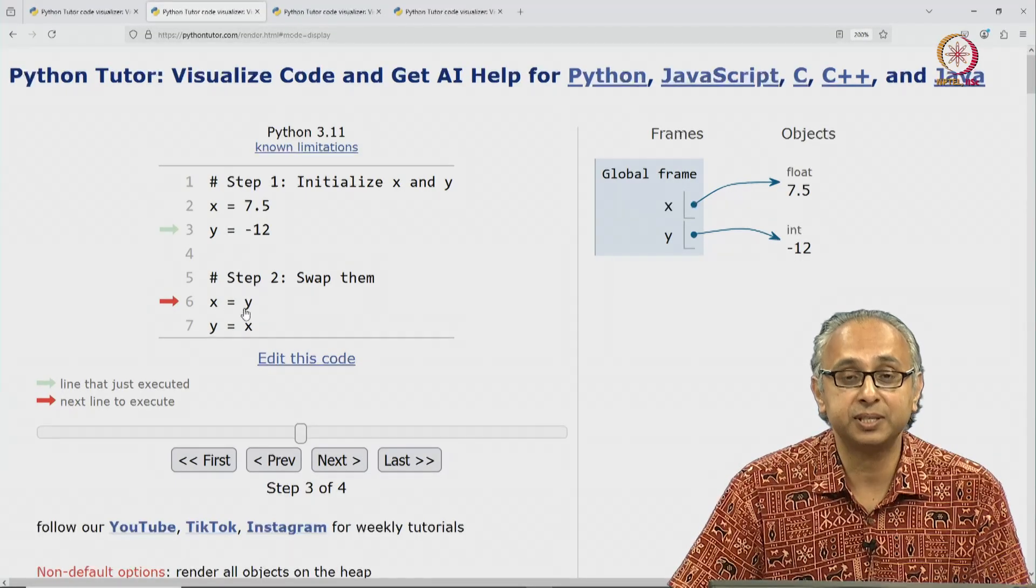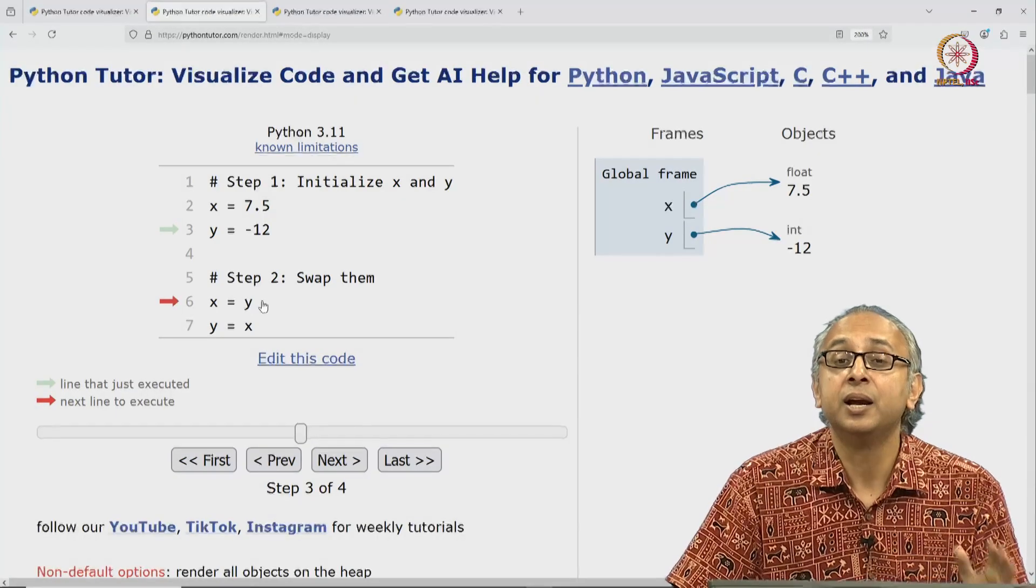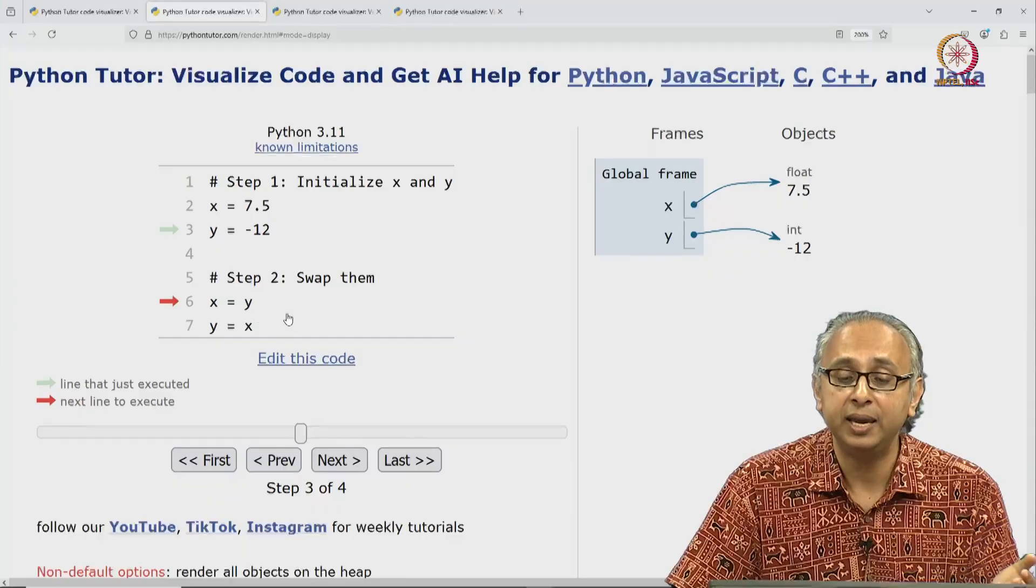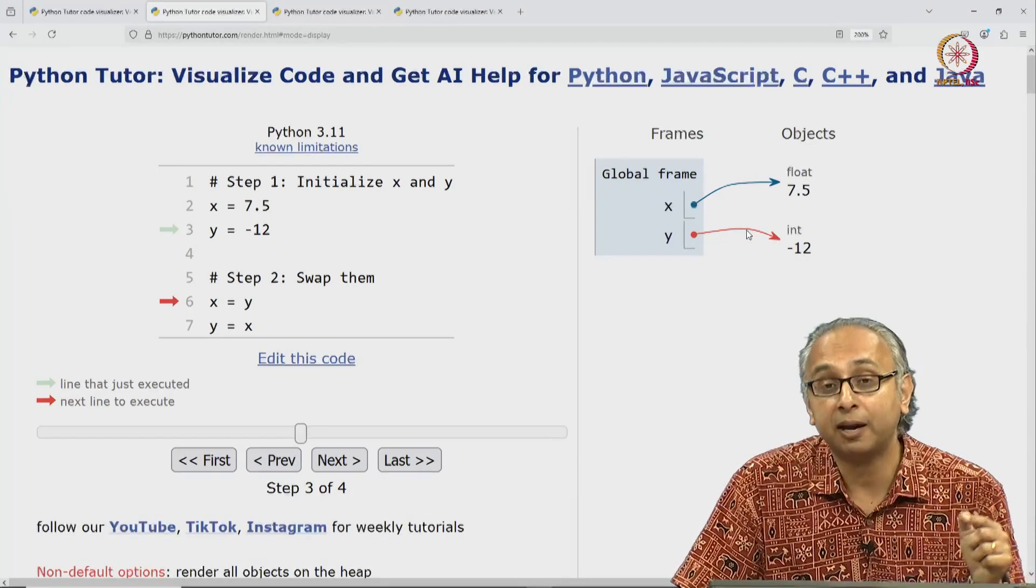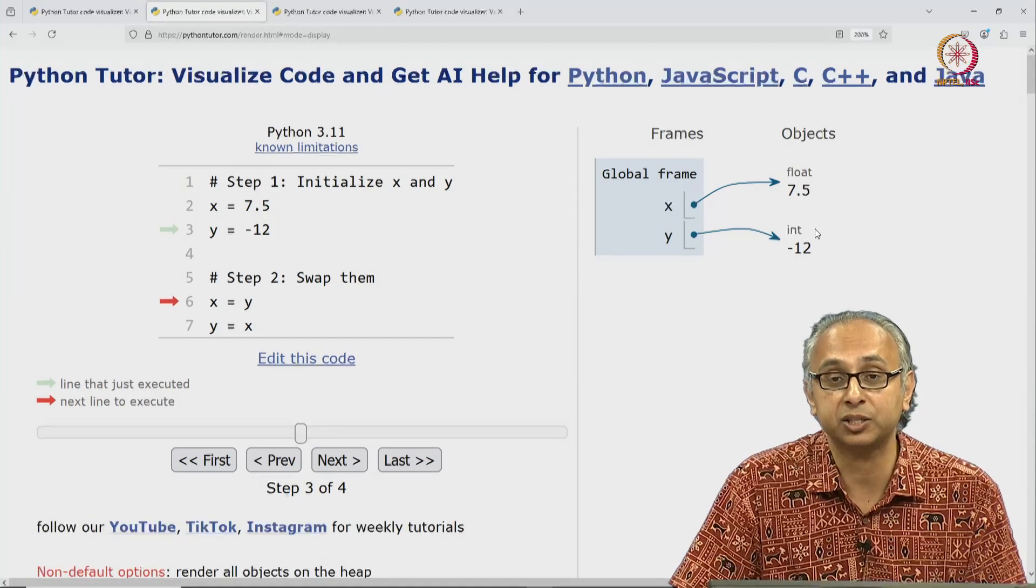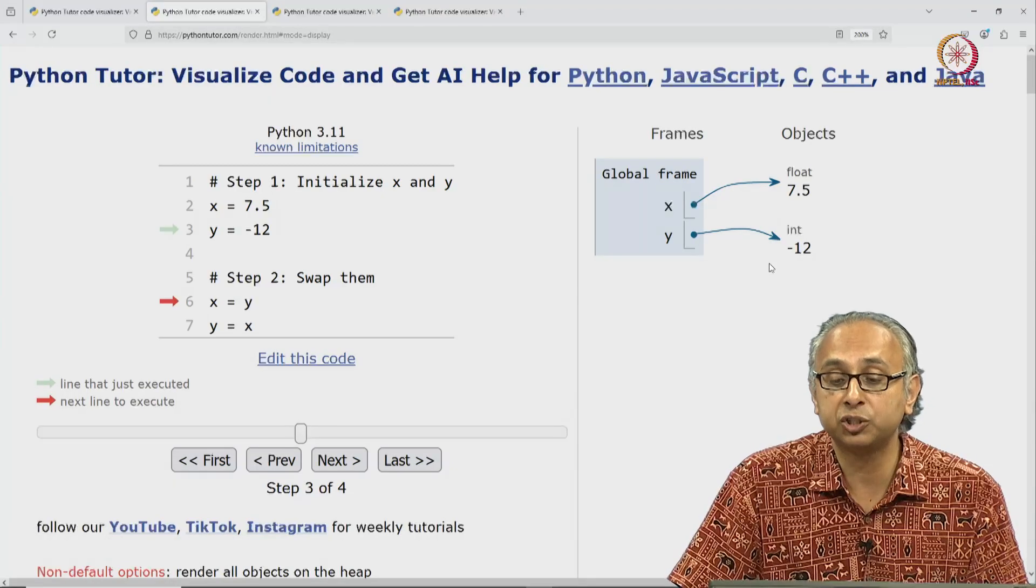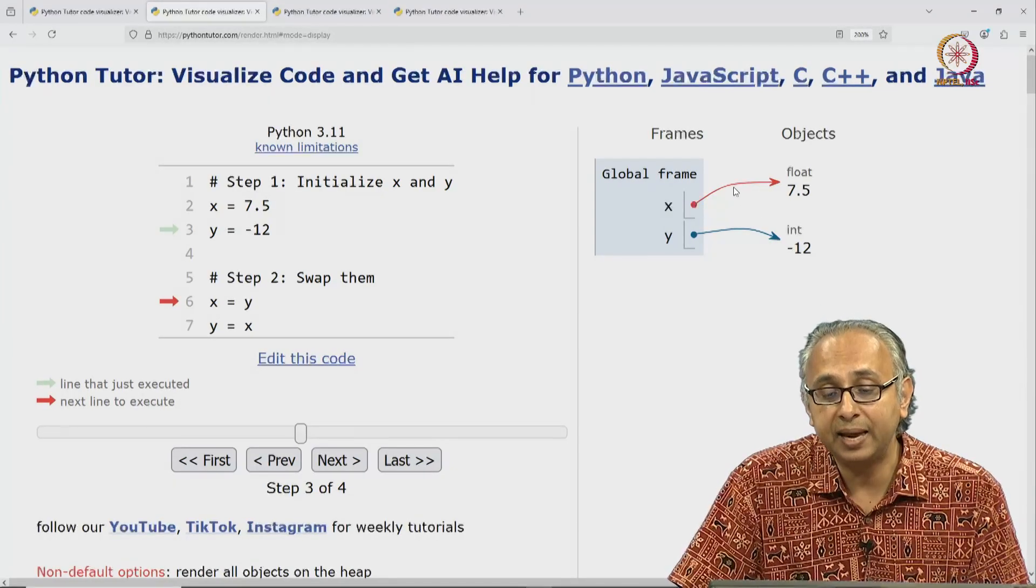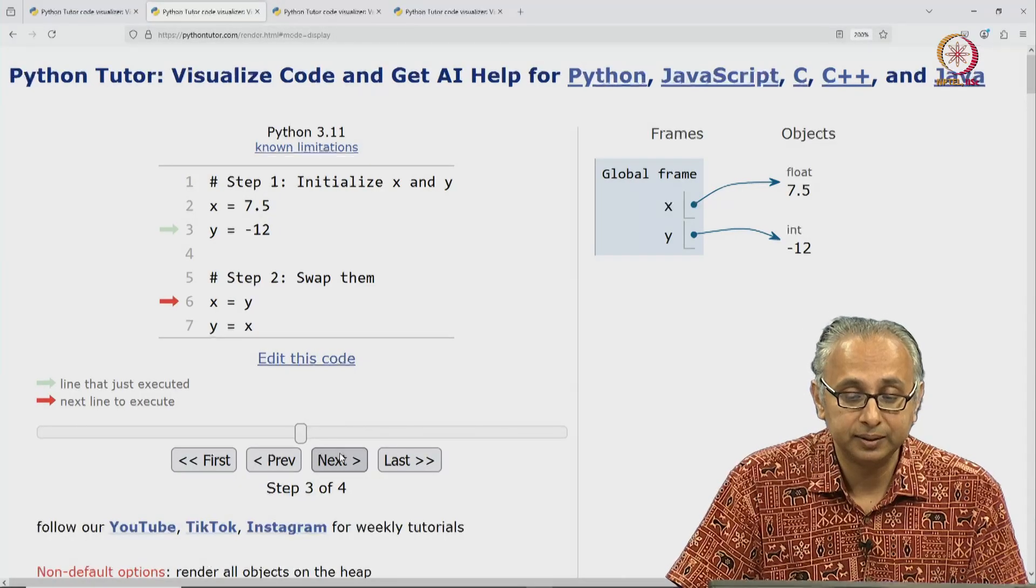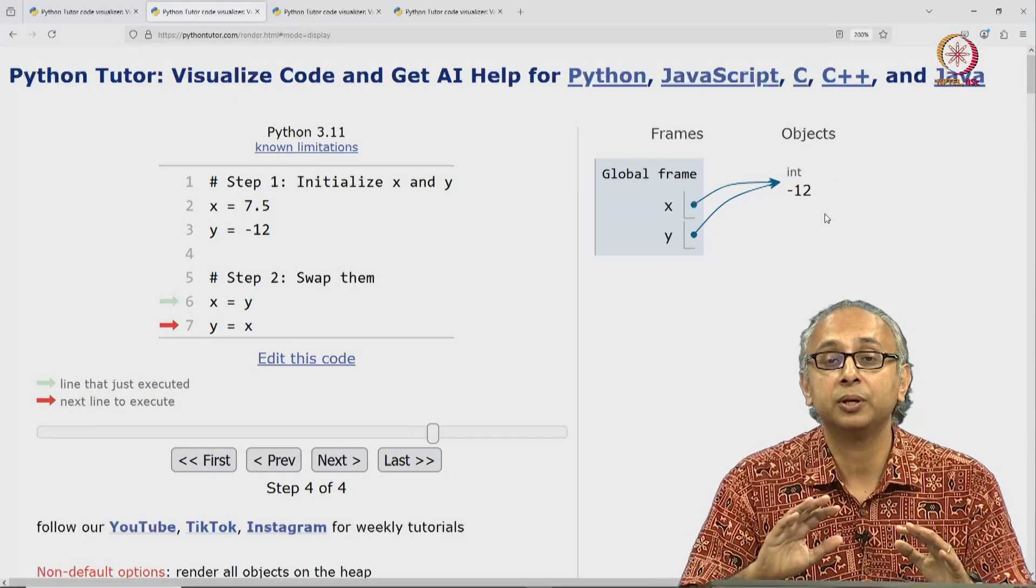We are going to do this assignment statement. Remember what it means. We have to evaluate the right hand side. The right hand side is a variable. So what does it mean to evaluate Y? It means identify the object that it currently labels. So we are going to evaluate the right hand side as this integer minus 12. And now the assignment statement says move the label X to this object. But the label X is currently labeling the float. So when we click on next, nobody is labeling the float. So the float has disappeared.